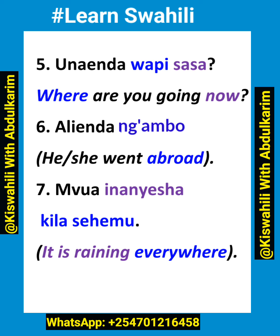Saba — mvua inanyesha kila sehemu. It is raining everywhere. So the phrase kila sehemu is the adverb of place meaning everywhere.